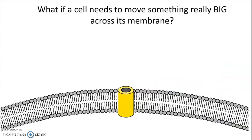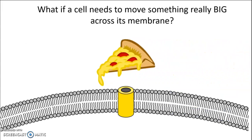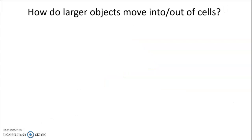But what if a cell needs to move something really big across the membrane? Whatever this object is, it's too large to wiggle between the phospholipids and too large to move through a transport protein. So cells need other mechanisms to move large objects into and out of the cell across the membrane — and that's what this video is going to focus on.